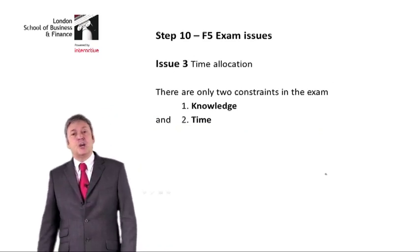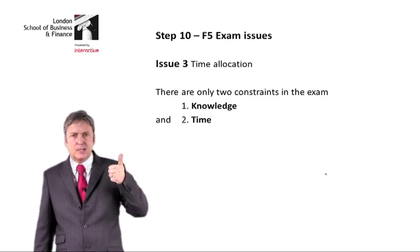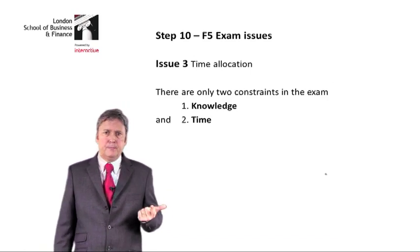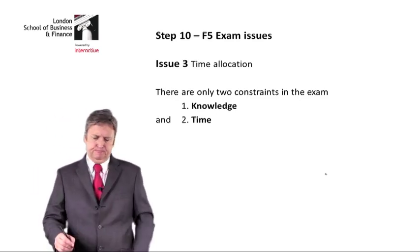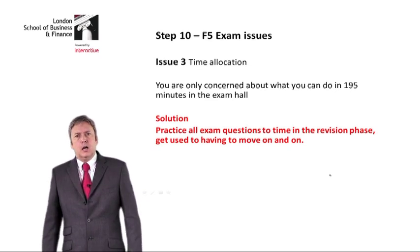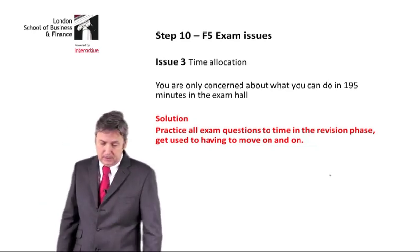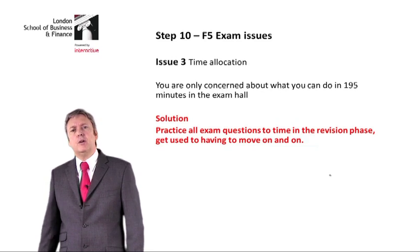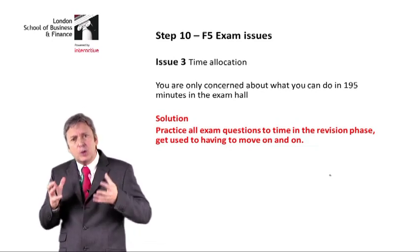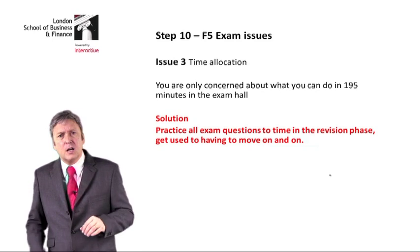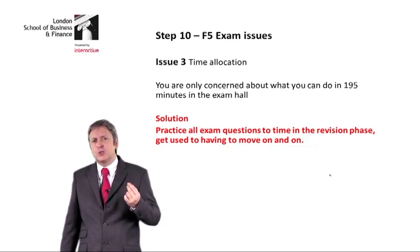Issue three: time allocation. There are only two major constraints in an exam — one is knowledge, and the other is how you manage your time. I've already suggested back in step two or step three how to manage your time. You've got 195 minutes in the exam: 15 minutes reading time and 180 minutes for the exam proper. The nearer you get to the exam, the more time you should spend practising questions within limited time. I don't care if you get a perfect answer if it takes two hours — you've only got approximately 35 minutes for each exam question.